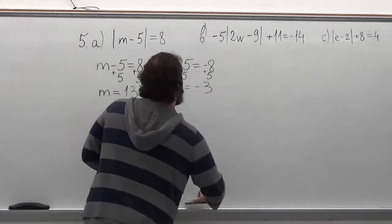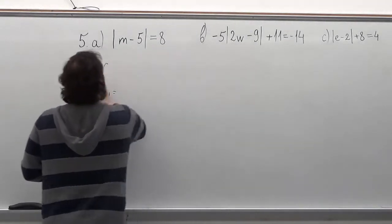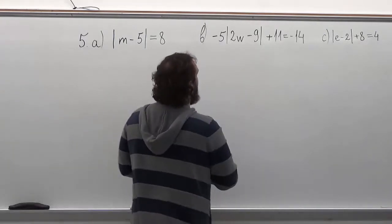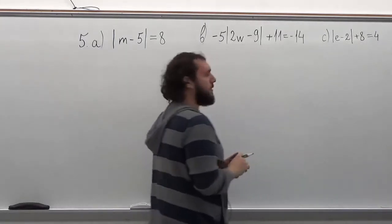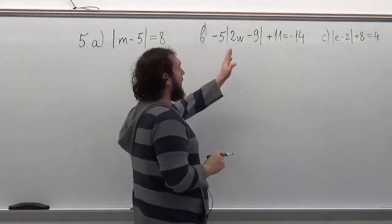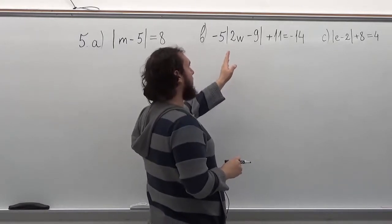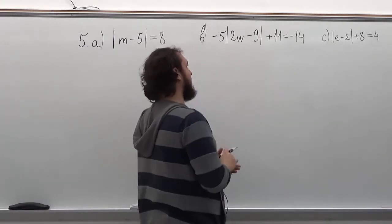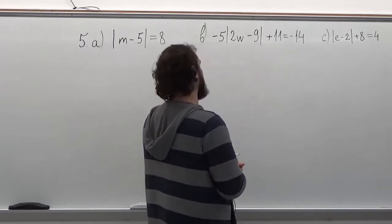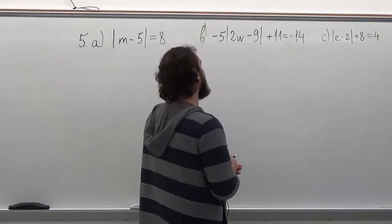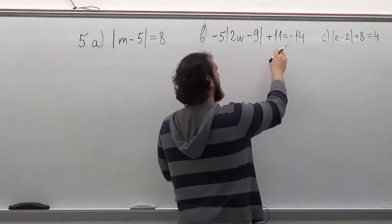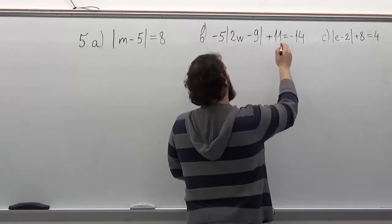In the second problem, what we want to do is we want to have an absolute value and nothing else on one side, so that we can then do the same thing as we did in the first problem. So for that, the first step would be to add negative 11 to both sides.